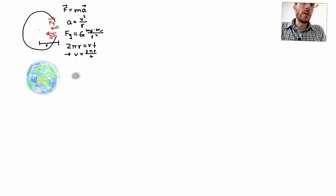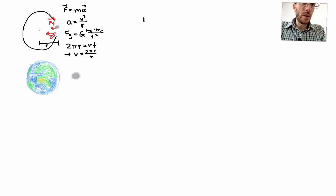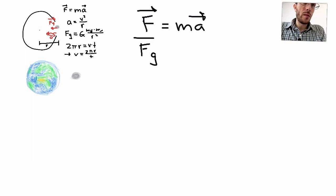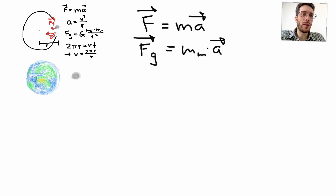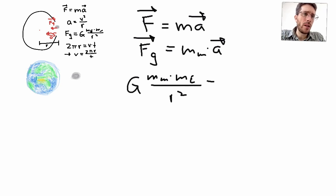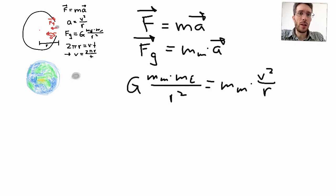Now let's work this out. Assuming we go in the left direction, the sum of all forces equals ma. The force of gravity equals the mass of the Moon times the acceleration of the Moon. The force of gravity and acceleration point in the same direction. So we plug in: G times the mass of the Moon times the mass of the Earth over r squared equals the mass of the Moon times v squared over r, for the centripetal case. The mass of the Moon cancels out — something we do not need to know.